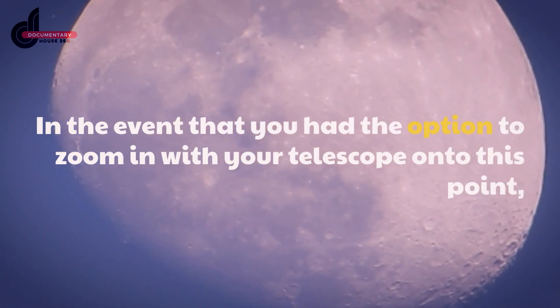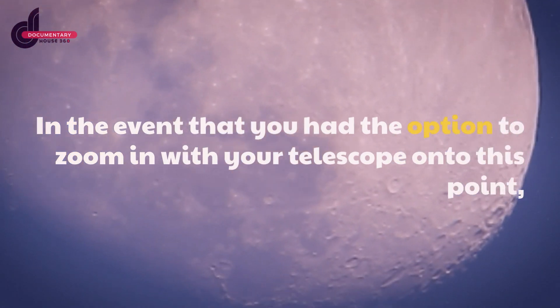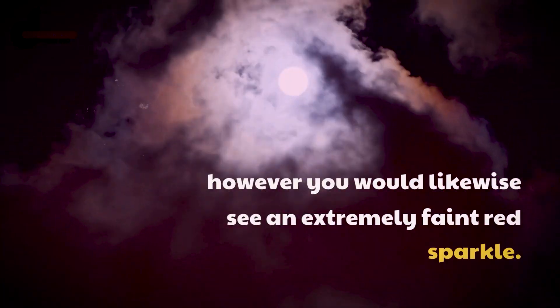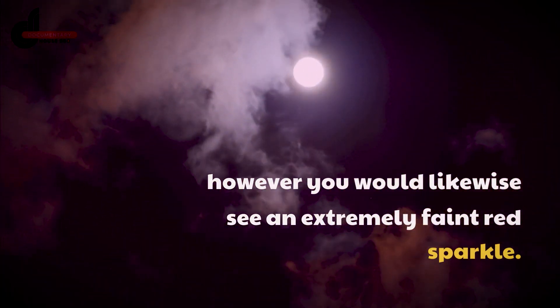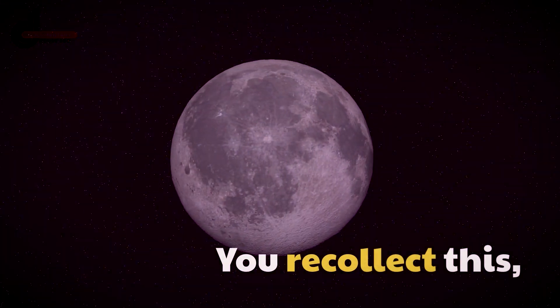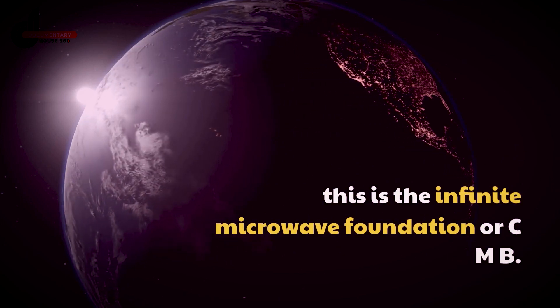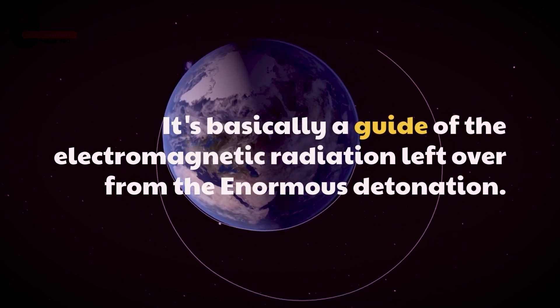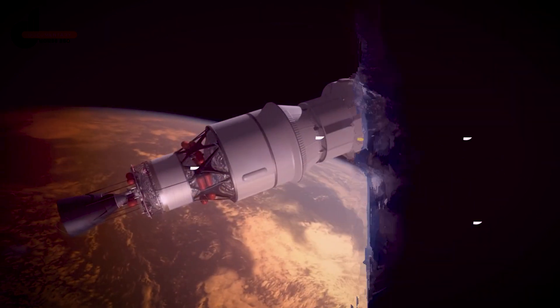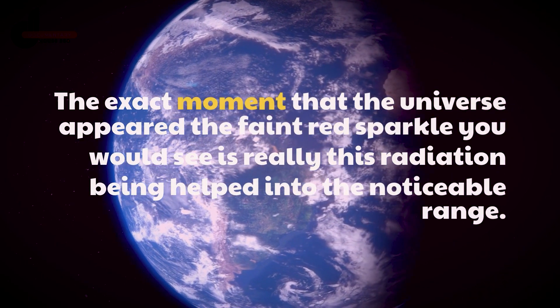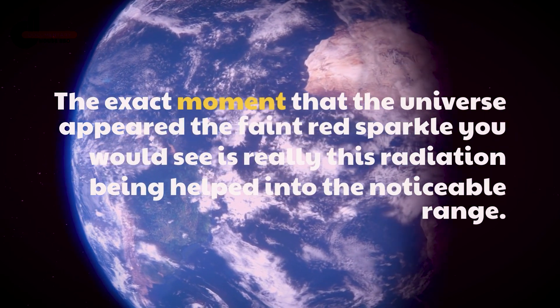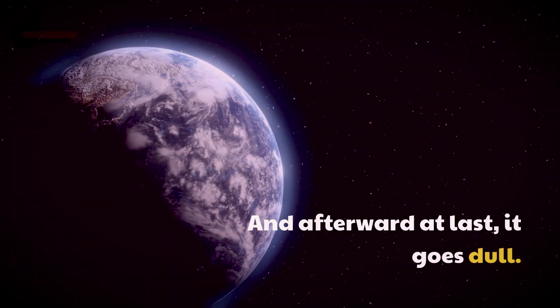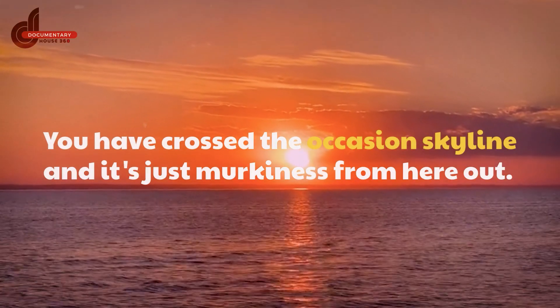You see the remainder of the visible universe condensed into one single tiny point directly behind you. In the event that you had the option to zoom in with your telescope onto this point, you would see the light from every one of the stars in the galaxies in the universe. However, you would likewise see an extremely faint red glow. You remember this: this is the Cosmic Microwave Background, or CMB. It's basically a map of the electromagnetic radiation left over from the Big Bang, the exact moment that the universe appeared. The faint red glow you would see is really this radiation being shifted into the visible range. And then at last, it goes dark.